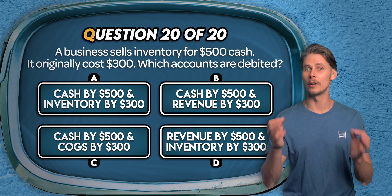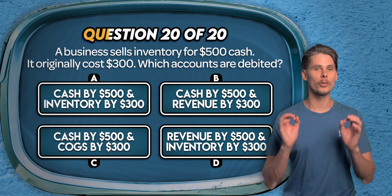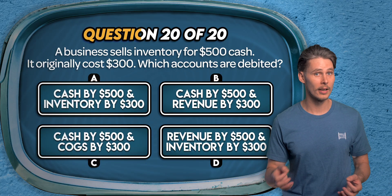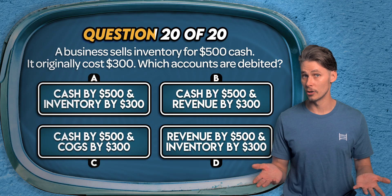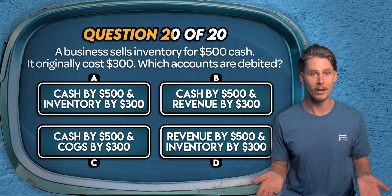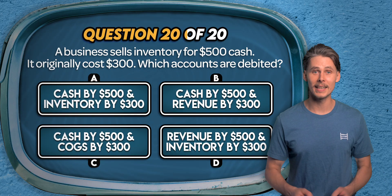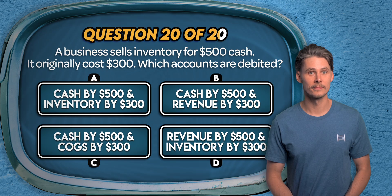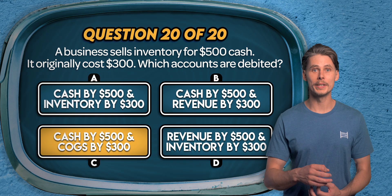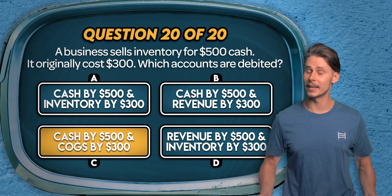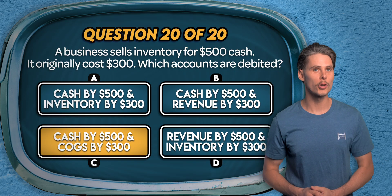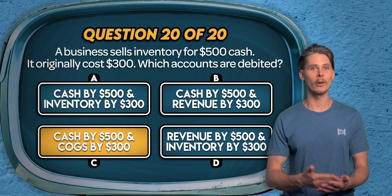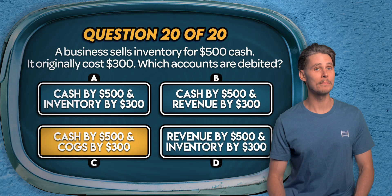Question 20. A business sells inventory for $500 cash — it originally cost $300. Which accounts are debited? The answer is C: cash by $500 and cost of goods sold by $300. We debit cash by $500 to increase assets on the balance sheet, and debit cost of goods sold by $300 to record the cost on the income statement. On the flip side, we credit revenue by $500 and inventory by $300.